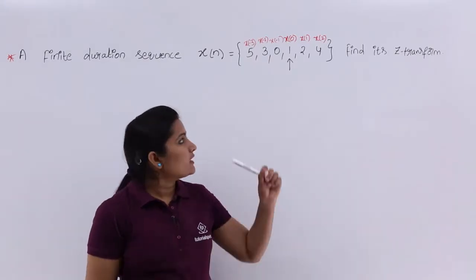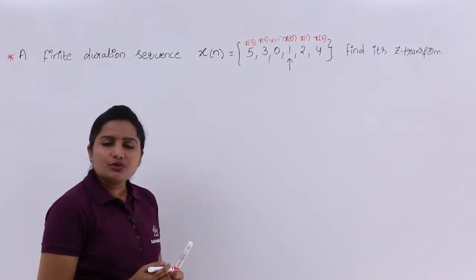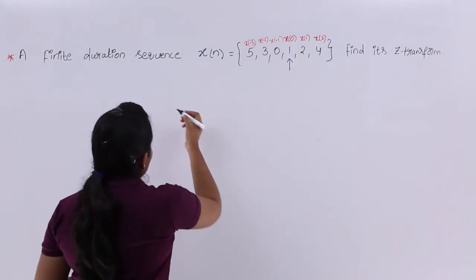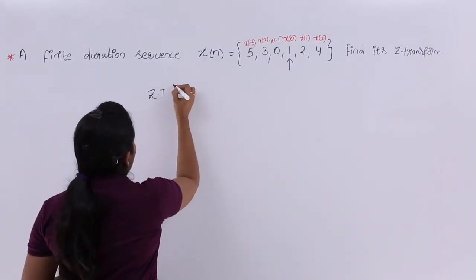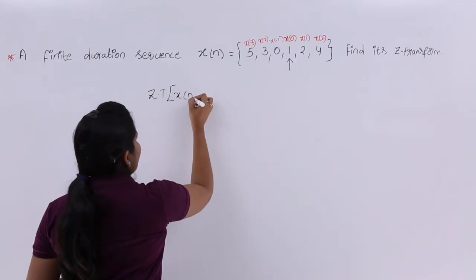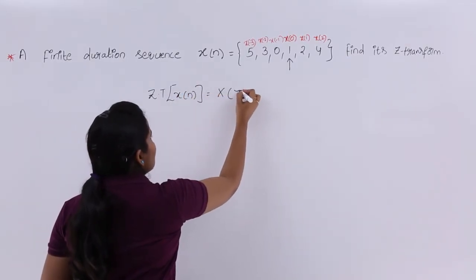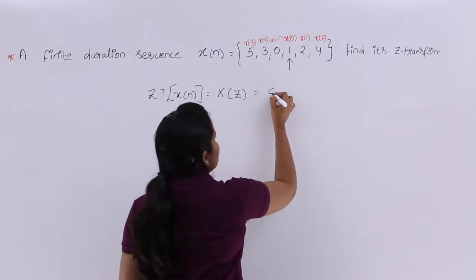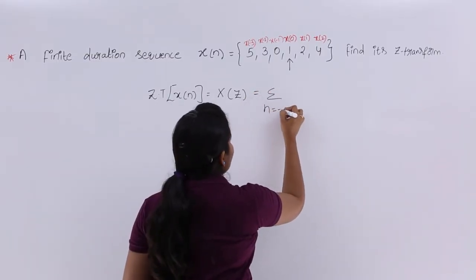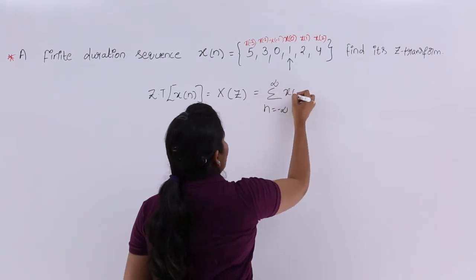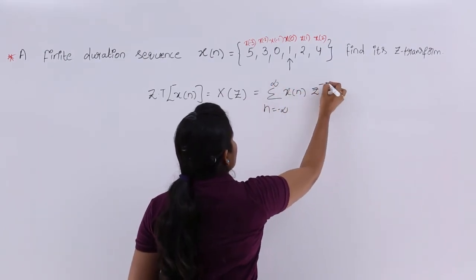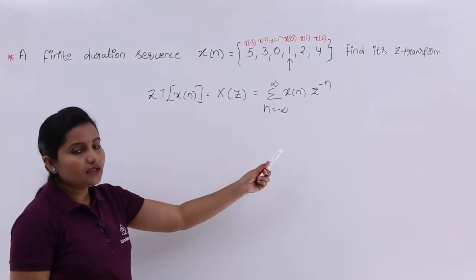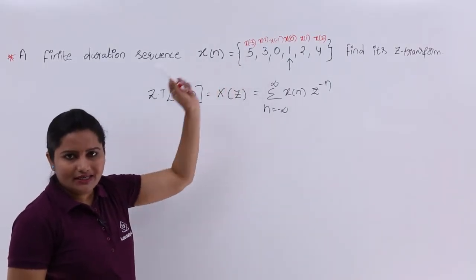For this sequence we need to consider the Z-transform. For any discrete signal X of n, the Z-transform is represented as X of Z. The equation for Z-transform is: summation from n equals minus infinity to infinity of X of n into Z power minus n. This is the equation used to calculate the Z-domain representation of the given sequence.